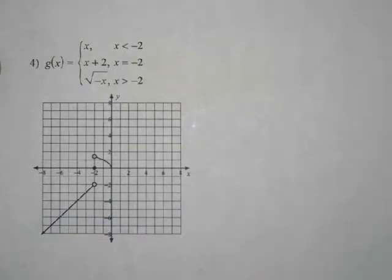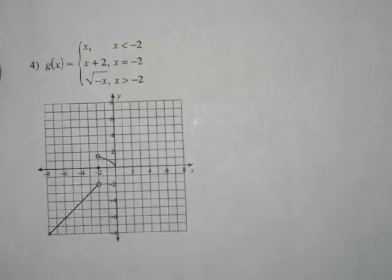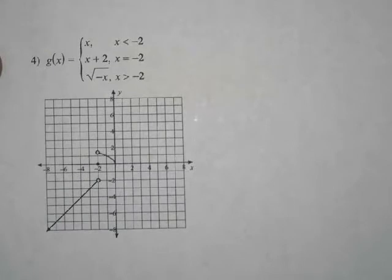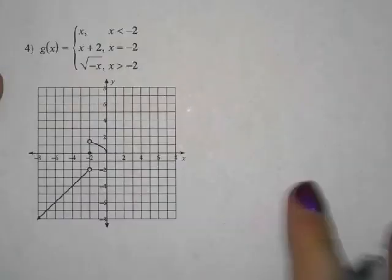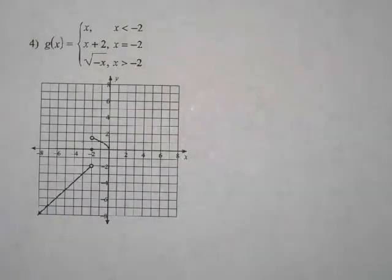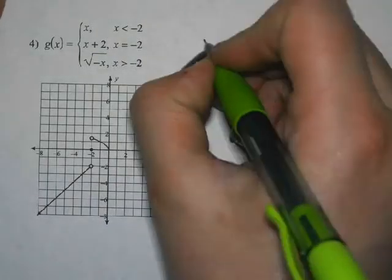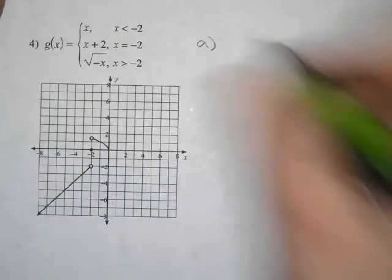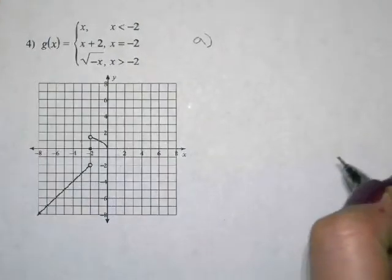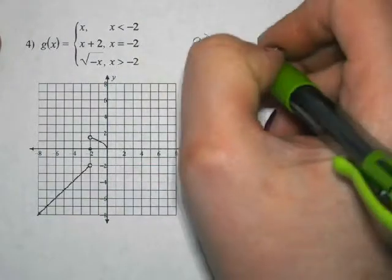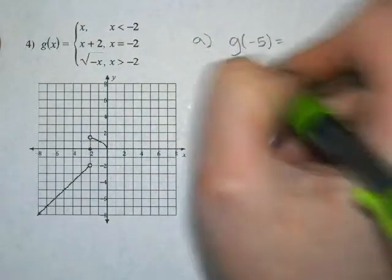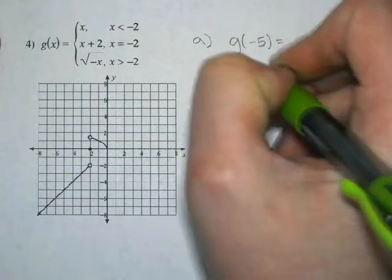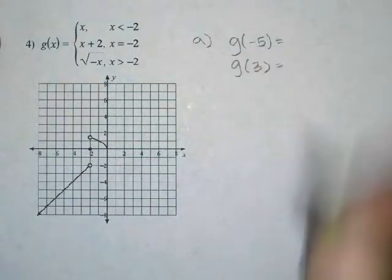One of the things you're going to be asked to do on the assignment with analyzing is to plug numbers in — to evaluate the function. I'm going to ask you to find the function evaluated at negative 5 and the function evaluated at 3.